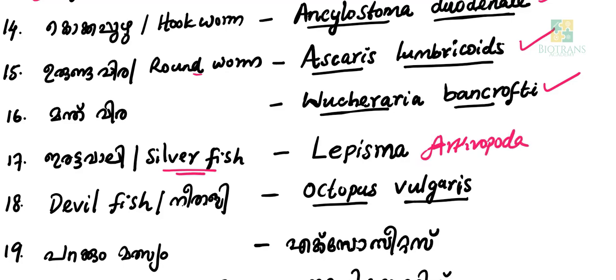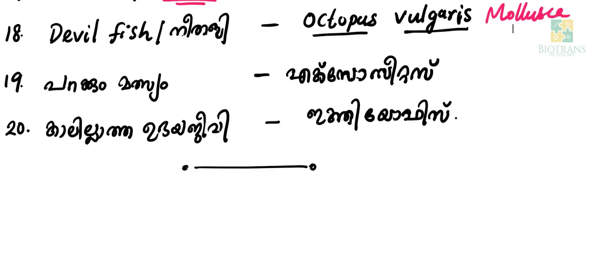Lepisma belongs to Phylum Arthropoda. Devil fish and Fishing Angle also belong to Phylum Arthropoda. Octopus vulgaris. Phylum Arthropoda. Exocoetus.